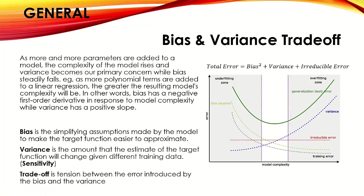Bias is the simplified assumption made by a model to make the target function easier to approximate. Variance, also called sensitivity, is how much change in the input data is detected by the model in the output. The bias-variance trade-off is the tension between the error produced by bias and variance — high bias as well as high variance both produce error.